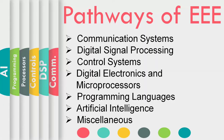Pathways of the Electrical Engineering Education Program. Courses related to six pathways will be offered. These include: Communication Systems, Digital Signal Processing, Control Systems, Digital Electronics and Microprocessors, Programming Languages, and Artificial Intelligence. There will also be miscellaneous topics such as research methods, state-of-the-art topics, and topics suggested by the viewers.